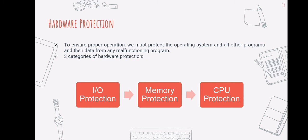Our last topic is hardware protection. To ensure proper operations, we must protect the operating system and all other programs and their data from any malfunctioning program. Protection is needed for any shared resource. Hardware protection is divided into three categories: IO protection, memory protection, and CPU protection.